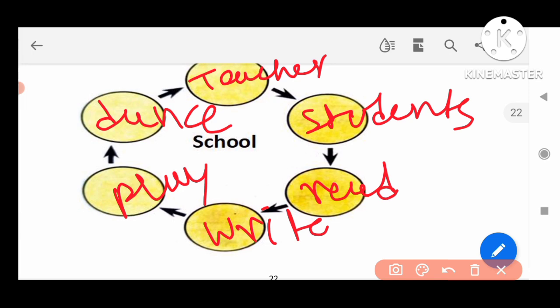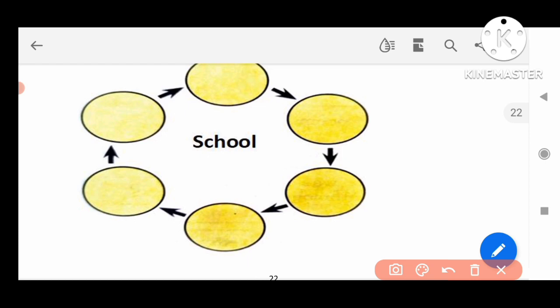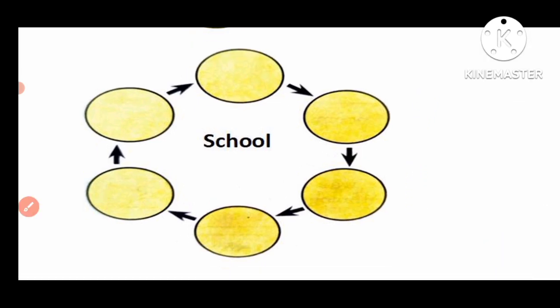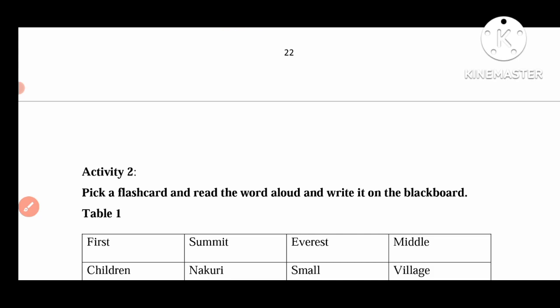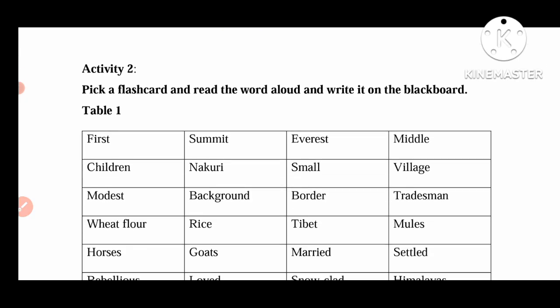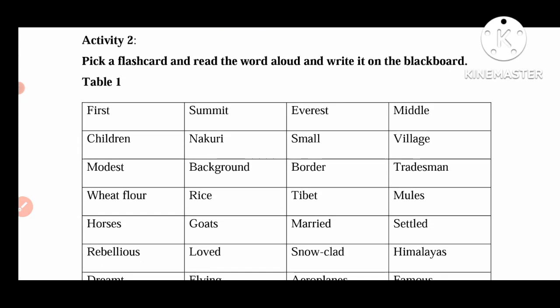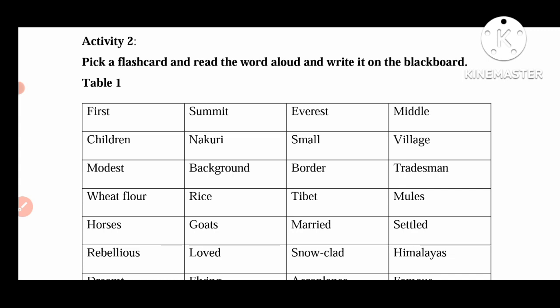This is Activity 1 for the learning outcome. Next is Activity 2. Here we pick the flashcard — we make flashcards of these words. For example: first, summit, average, middle — like this, we make flashcards of these words.